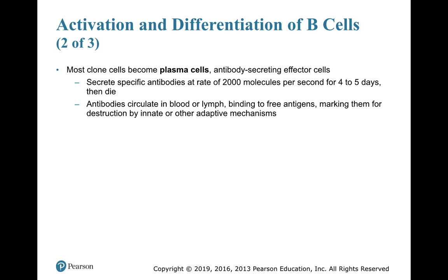Those plasma cells are antibody-secreting cells. They secrete antibodies that bind to a specific antigenic determinant on a specific antigen at a rate of about 2,000 molecules per second. They live for four to five days. Those antibodies circulate in humors — body fluids — that's why we call it a humoral response, such as blood and lymph. They will bind to any antigen they find, marking them for destruction by the innate immune system or other adaptive mechanisms.